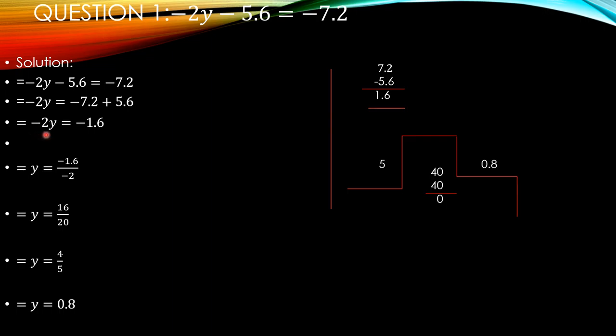Now, minus 2y. 2 is multiplied by y. Now we are moving to the right hand side. 2 changes into division. Division means it becomes denominator. Now, minus 1.6 upon minus 2. Minus minus cancel out, and it is 1.6 upon 2. Now we are removing the decimal from the numerator. When we remove the decimal point, we get 0 in the denominator. Denominator becomes 20 and numerator becomes 16.